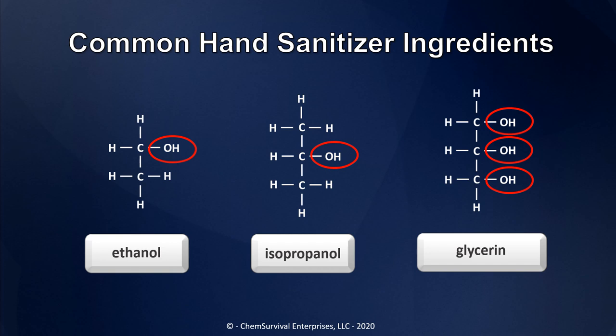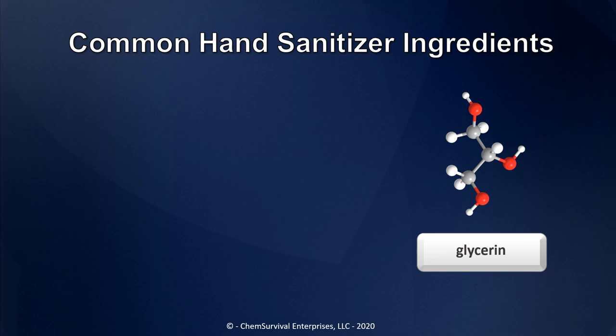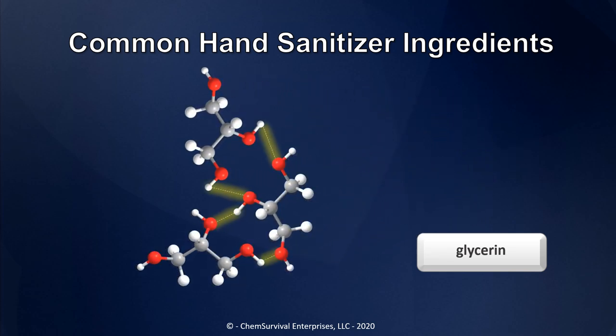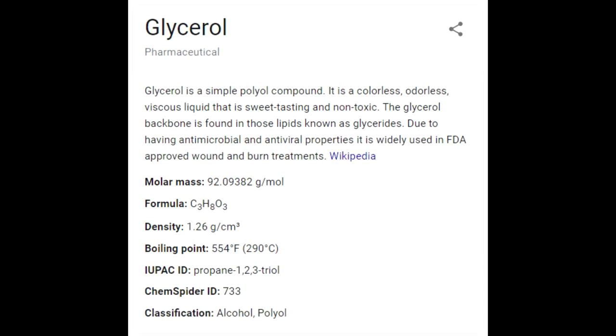So how does having more hydroxyl groups make glycerin resistant to evaporation? The answer to this question is hydrogen bonding. The hydroxyl groups from different molecules can form an attractive arrangement called a hydrogen bond, and glycerin has loads of hydroxyls. This makes glycerin molecules stick to one another really, really well, keeping them in close contact and making it much, much slower to evaporate. In fact, glycerin has a boiling point of about 290 degrees centigrade — more than 200 degrees higher than ethanol's — and it's because of these interactions.